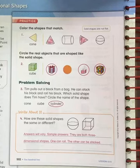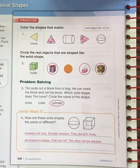Tim pulls out blocks from a bag. He can stack his blocks and roll his block. Which solid shape does Tim have? Circle the name of the shape. A cylinder can be stacked and rolled.